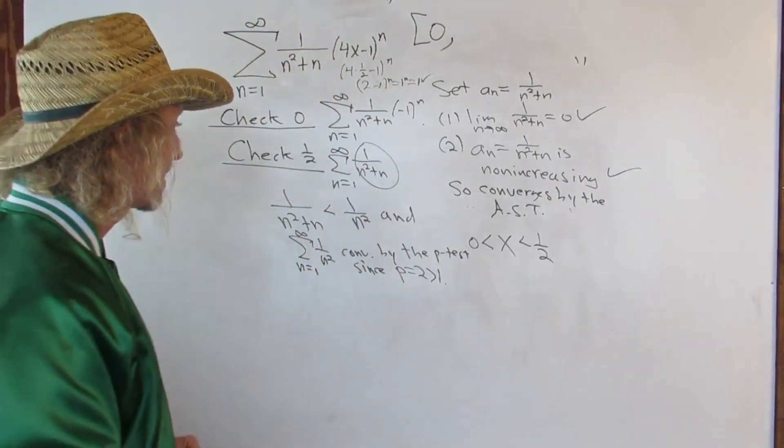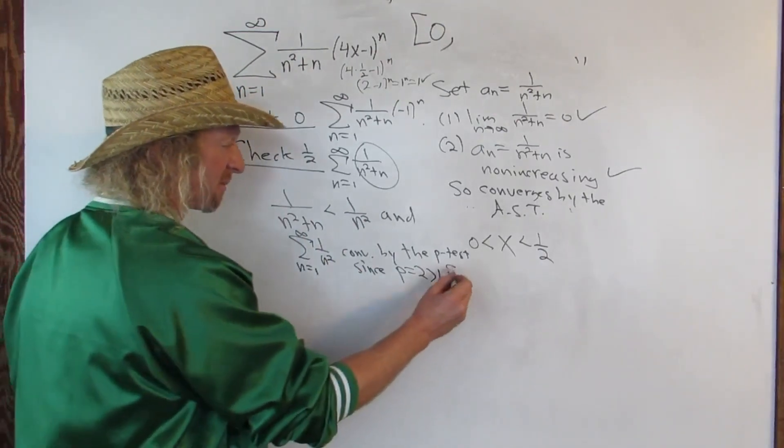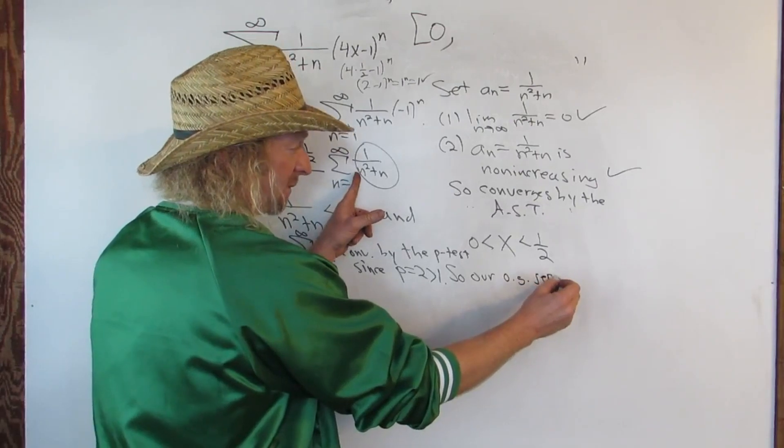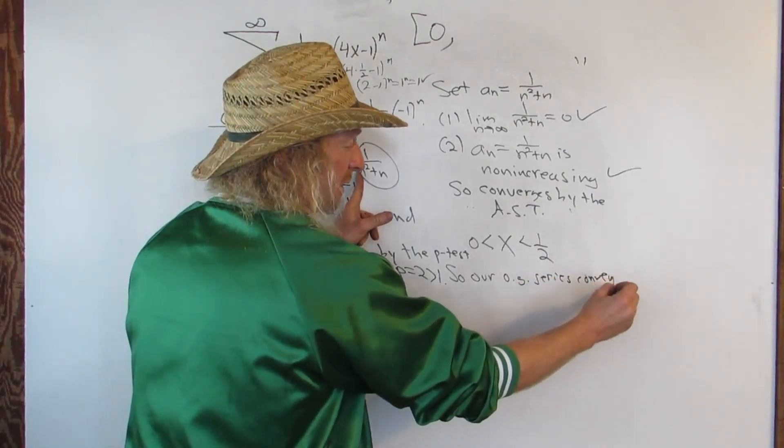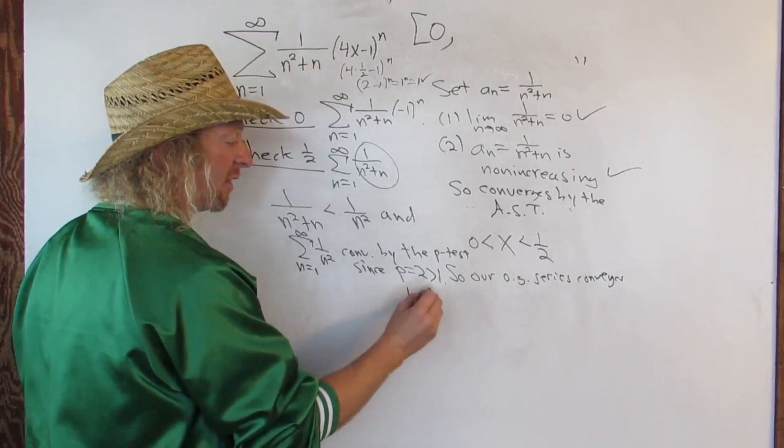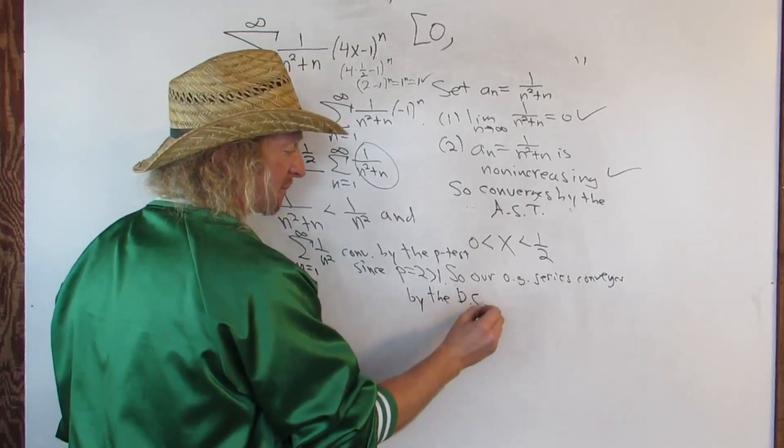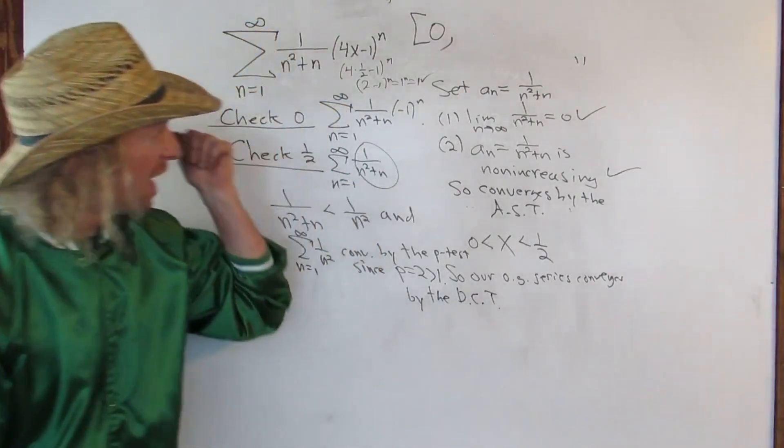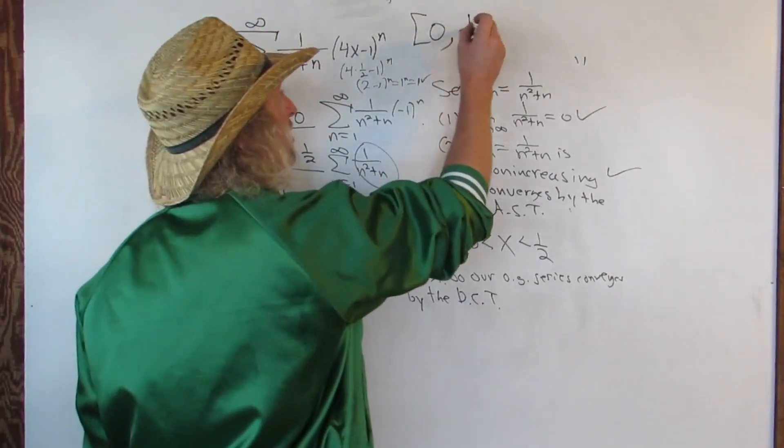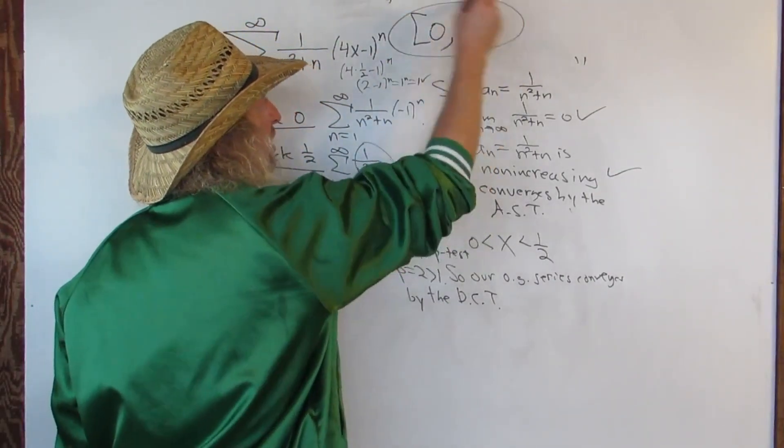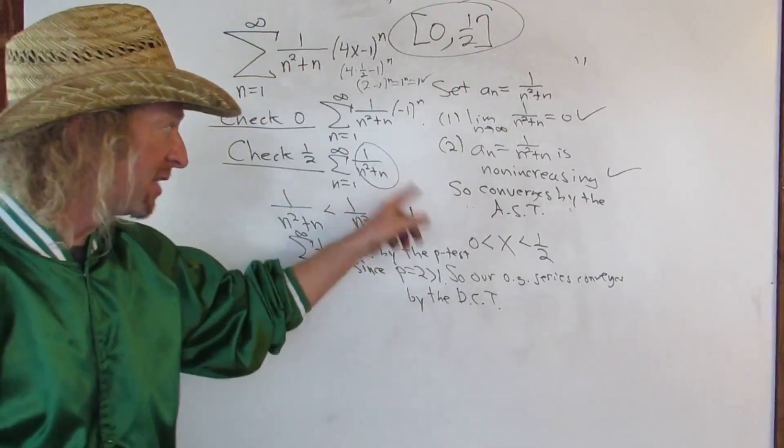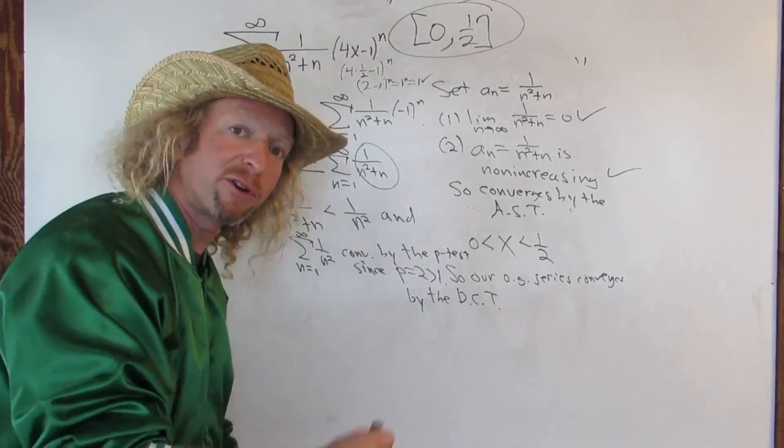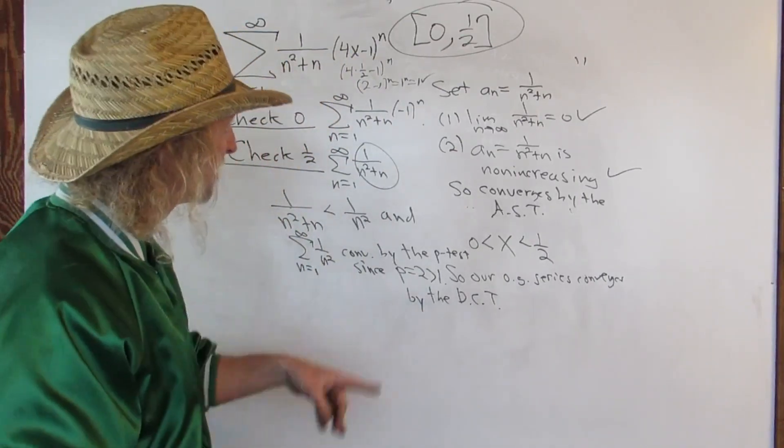So our series, so our OG series, OG means original, this one, converges by the direct comparison test. Okay, I'm going kind of fast because my battery's dying. So it converges so we have another bracket. So this is the interval of convergence. So recap. You use the ratio test. You find your endpoints, and you plug them back in, and you just use your regular series test. If it converges, you put a bracket. If it doesn't, you put a parenthesis.